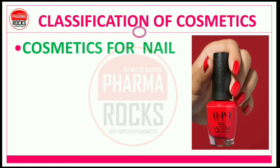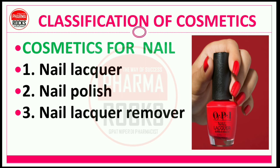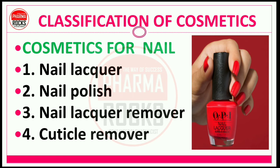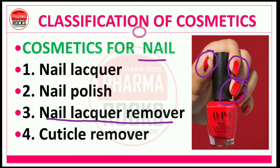Next, cosmetic preparations for the nail: nail lacquer preparation, nail polish, nail lacquer remover, and cuticle remover. These preparations are used for beautification and to protect our nails. Nail polish is used to decorate nails; if you want to change the nail polish shade, you first need nail lacquer remover to completely remove the existing shade, then apply a different color. Cuticle remover is also used as a nail cosmetic.